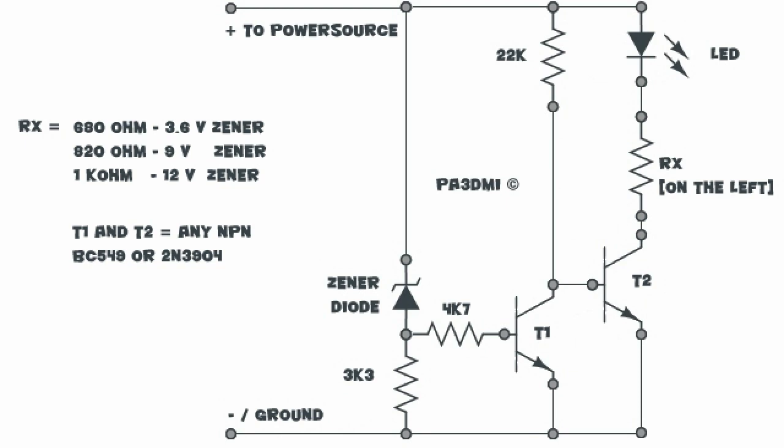On the left side of the drawing I've put some values. 3.6 volt, 9 volt, 12 volt. But you can use any type of Zener diode.